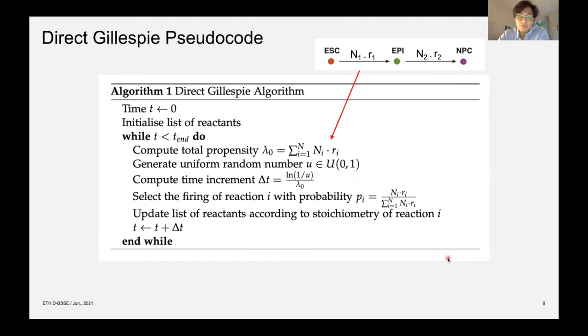A quick refresher on the direct Gillespie is shown here. We're using the Gillespie here to model a simple linear differentiation system. I'll go into detail later, but now we just need to know that we go linearly from ESC cell to EPI to NPC cell. So we have two reaction channels, reaction channel one and two. What the direct Gillespie does is it computes the total propensity of the whole system by summing up the propensities of each channel.